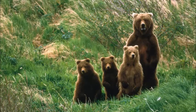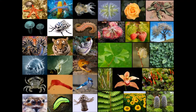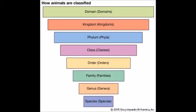But before we can get into examples, we need to understand the species concept. Understand that species are the only taxonomic categories that physically exist. Genera, families, orders, etc. are human constructs used to classify organisms.